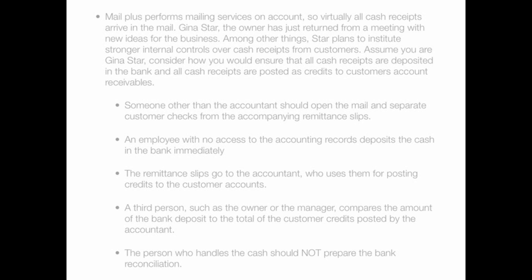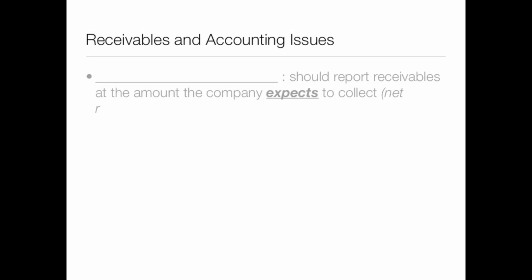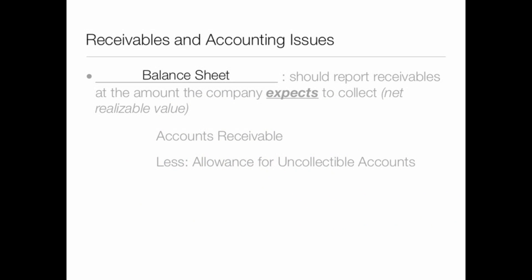Now let's look at receivables and accounting issues. Companies should report receivables at the amount they expect to collect — in other words, the net realizable value. Receivables appear on the balance sheet. To calculate net accounts receivable, we start with accounts receivable and subtract the allowance for uncollectable accounts — also called allowance for doubtful accounts — to get our net accounts receivable, which is what we expect to collect.